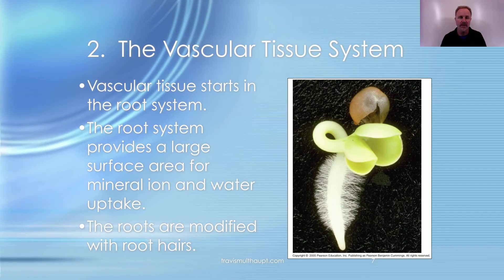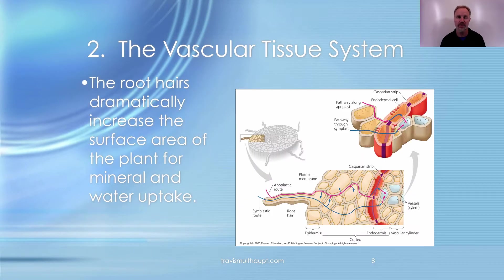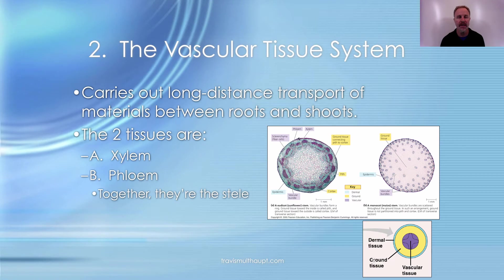The vascular system includes the xylem and phloem, which conduct sugary carbohydrate-rich fluids as well as water and minerals. Looking at a plant root, you can see a fuzzy appearance — those are root hairs. These modifications greatly increase the surface area of the plant and help increase the amount of water uptake.